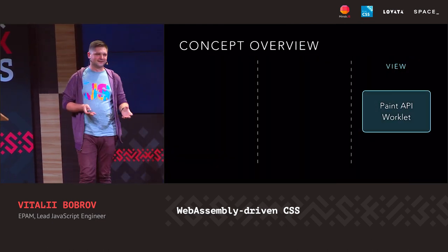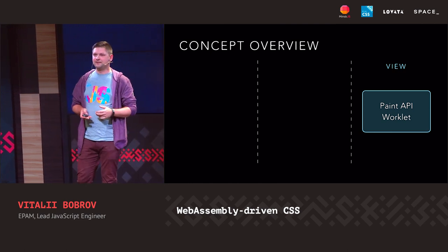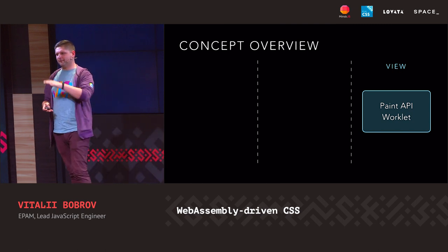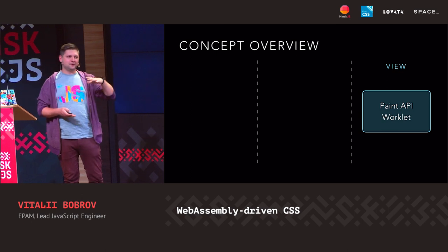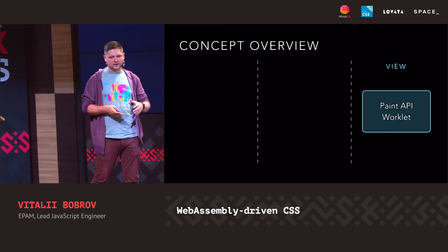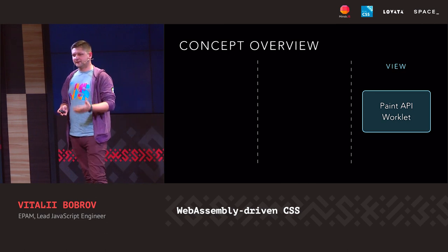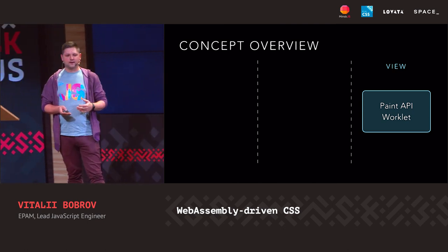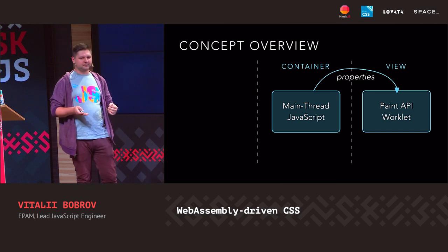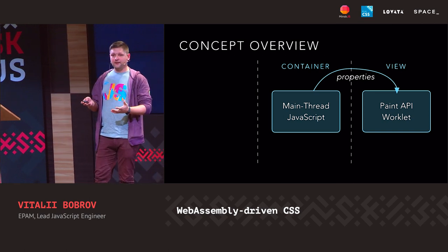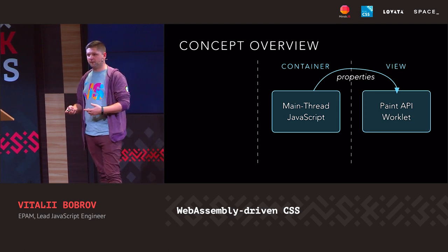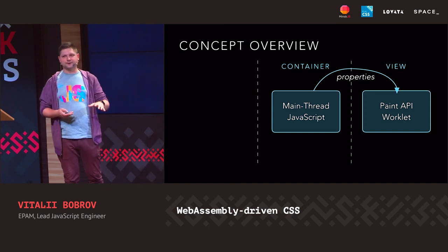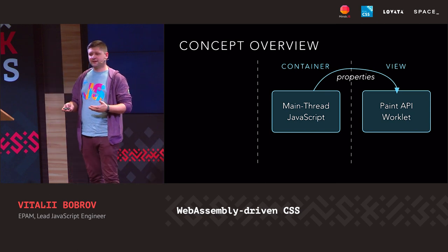So how does this concept look? We have a pure renderer — a Houdini Paint Worklet. We'll speak about each of these parts in detail later; now it's just a concept overview. It's the renderer — it's stateless, and it renders our animation to the screen for the user. It's a view layer. On the main thread, we have some glue JavaScript code that loads our Paint Worklet and updates properties. Those properties are passed to the Paint Worklet.